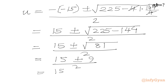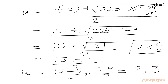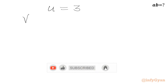This gives two values: (15 plus 9) over 2 equals 24 over 2 equals 12, and (15 minus 9) over 2 equals 6 over 2 equals 3. Applying our condition that u must be less than 13 over 2, which is 6.5, we reject 12 and accept 3. Therefore u equals 3.